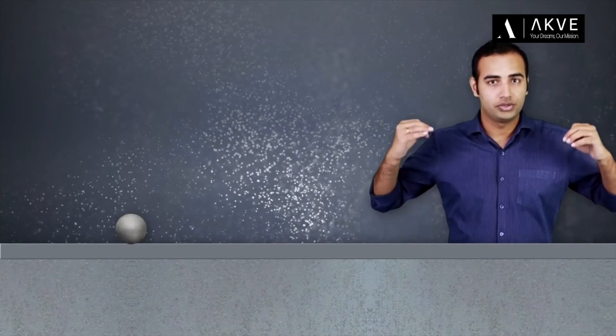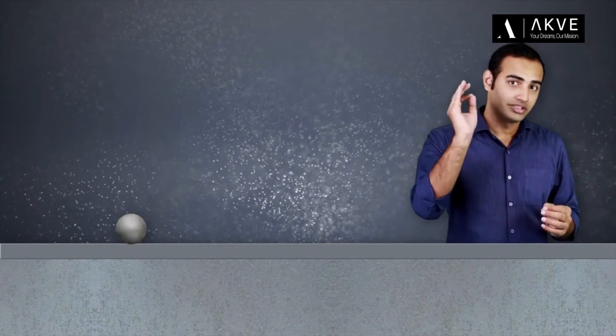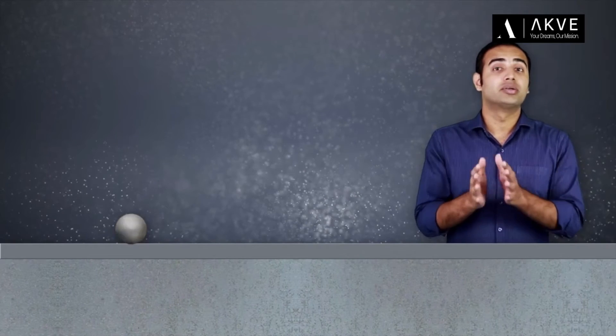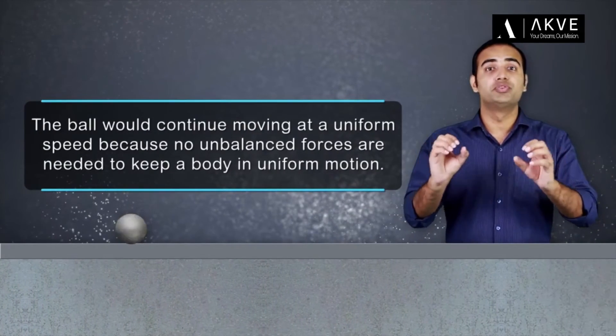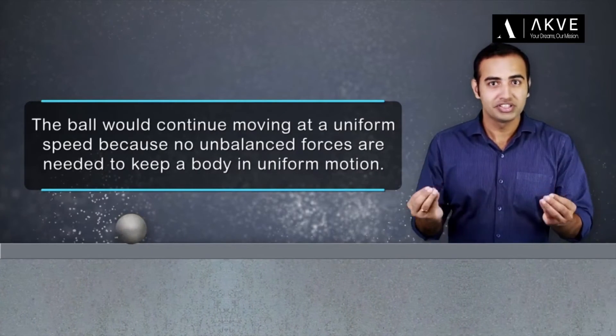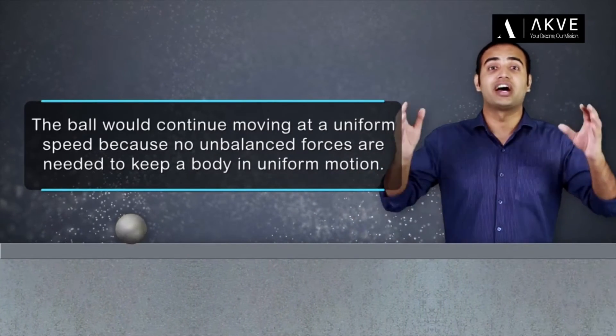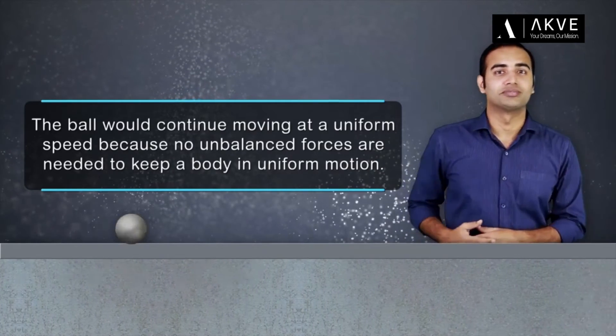Looking at the ball, Galileo concluded that as long as the surface remains smooth, the ball's speed would not change. Or in other words, the ball would continue moving at a uniform speed because no unbalanced forces are needed to keep a body in uniform motion.